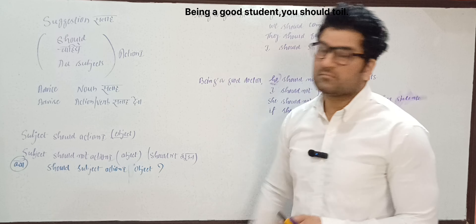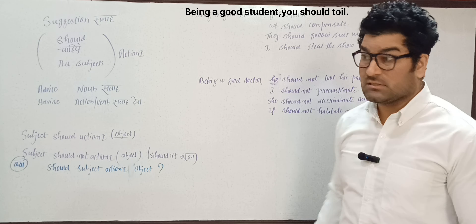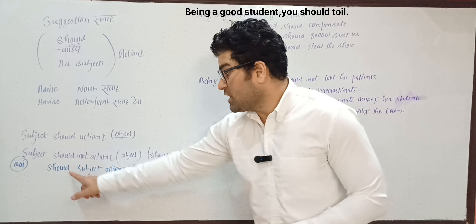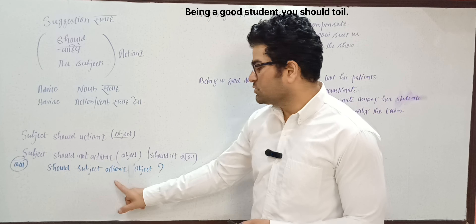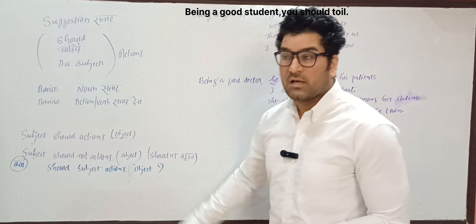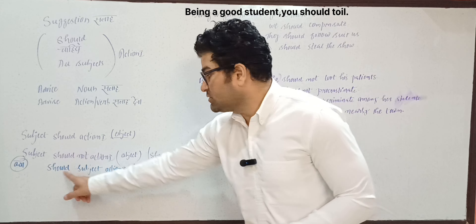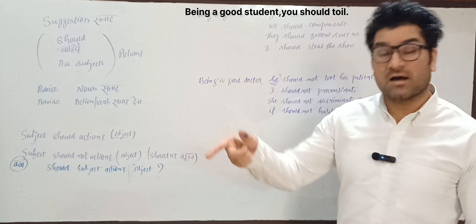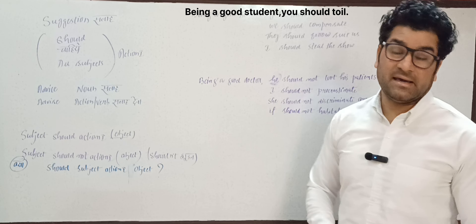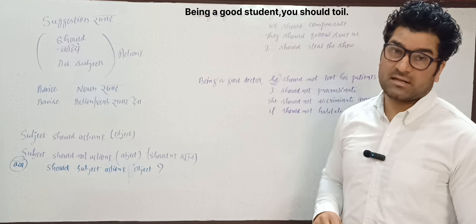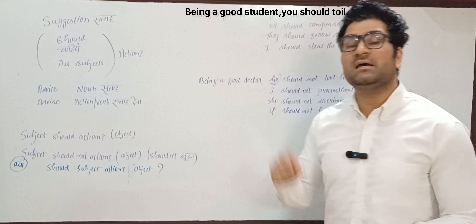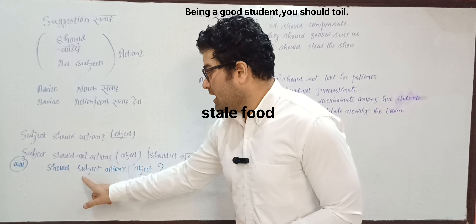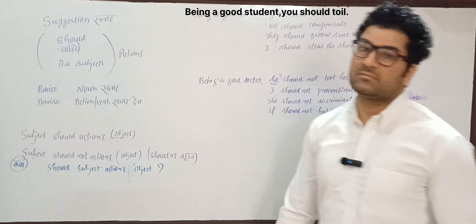Now let's look at question formation with 'should.' The formula is: Should + subject + first form of verb + object? If there is a specific place or object, you put it after the verb. For example: 'Should I go to college?' 'Should I eat?' And with an object: 'Should I eat stale food?' — stale food meaning food that is no longer fresh.